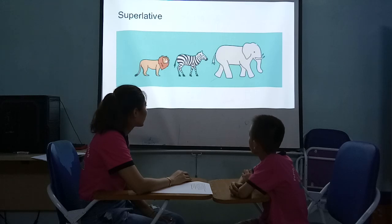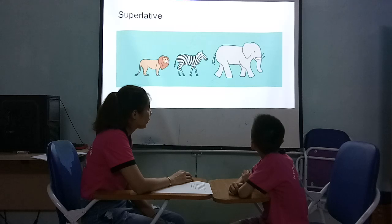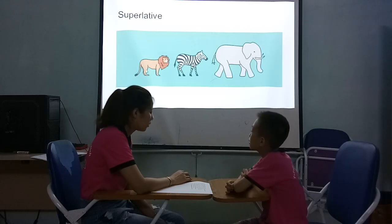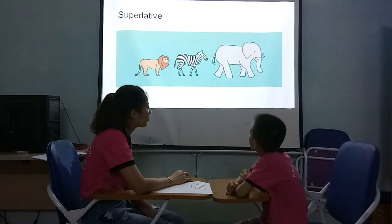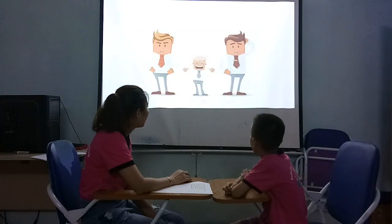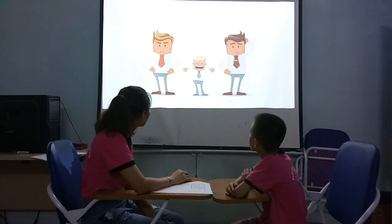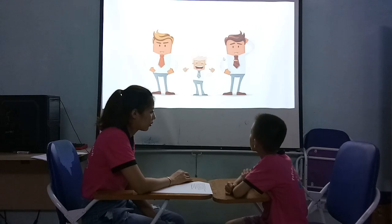And now the superlative. Let's try. The wooden chair is the biggest. Yes. The elephant is the biggest animal. And the lion is the smallest animal. How about the man who is the shortest? He is the shortest. He is the shortest man.